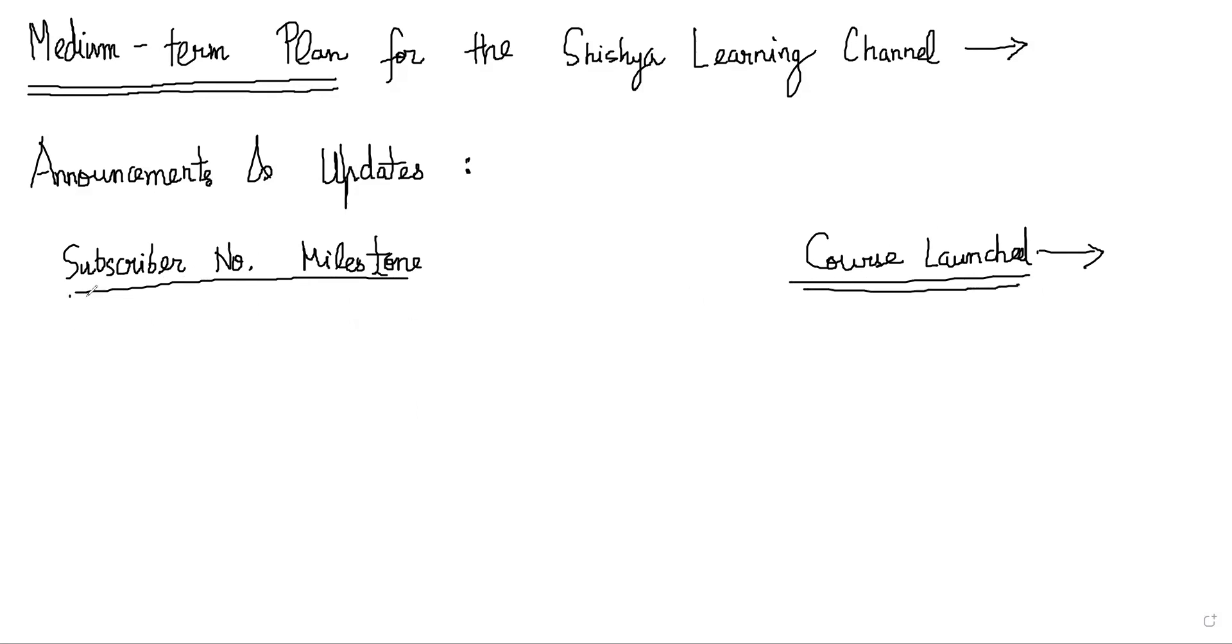The first milestone is 500 subscribers. When we hit 500 subs, the plan is to launch an advanced Theory of Equations and Galois Theory course. The reason why this course will be interesting is because equations are an important part of Olympiads, and sometimes there are tricky questions on cubic equations or bi-quadratic equations.